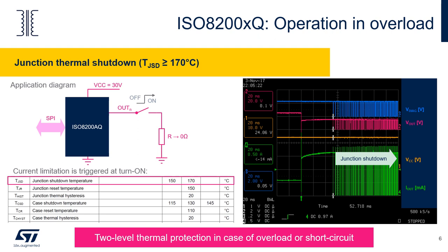If the IC operates in an overload condition, for example as a result of failure in the load or short circuit, its power stage operates in linear mode in order to limit output currents. In such a case, the thermal stress rapidly increases. Our drivers are designed to sustain such conditions by implementing what we call a two-level thermal protection mechanism. As soon as the channel temperature reaches the junction shutdown threshold, the first-level protection is triggered and the overheated channel is immediately switched off in order to cool down and keep its temperature within safe bounds.